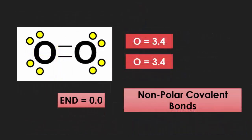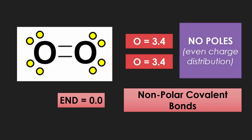So now looking at O2, the bonds between each oxygen ends up at zero, because they are both 3.4. If it ends up at zero, it is a non-polar covalent bond. That means there is no dipole. There is even charge distribution.